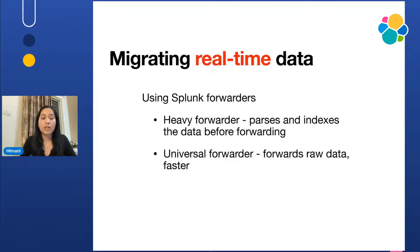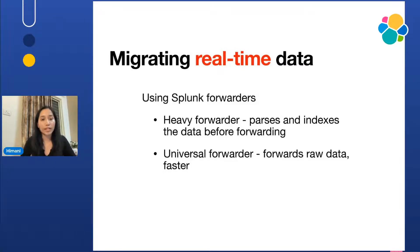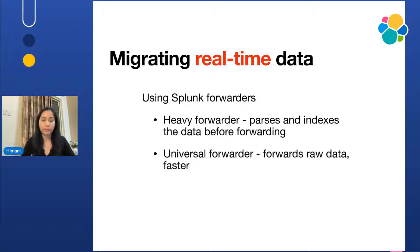In the case of real-time data, we need to use Splunk forwarders to redirect the data from Splunk to Logstash. There are two kinds of Splunk forwarders: the heavy forwarder, which structures the data before forwarding it, and the universal forwarder, which forwards raw data and is hence faster. In this use case, I have worked on syslog data, and Splunk documentation recommends using a heavy forwarder for that. Also, a heavy forwarder is nothing but a Splunk enterprise instance.